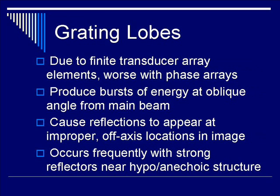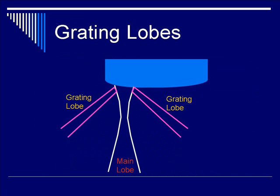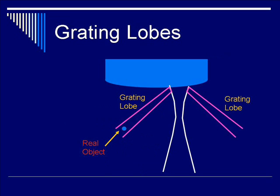In the next slides, we will discuss how grating lobes are generated. This diagram shows a curvilinear transducer array with the main lobe signal coming out and grating lobes at a very acute oblique angle on either side of the main beam. The real object is depicted in blue as a circle. As the beam is scanned from left to right across the transducer, the grating lobe will hit the real object, and the signal will return to the main beam such that the transducer thinks the real object is located far away, lateral to the actual object of interest. Therefore, this artifact is located lateral to the real object as an effect of grating lobes.